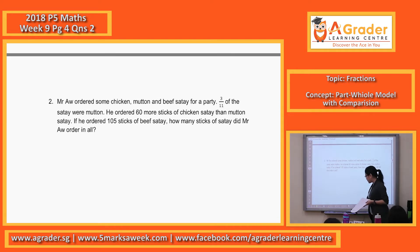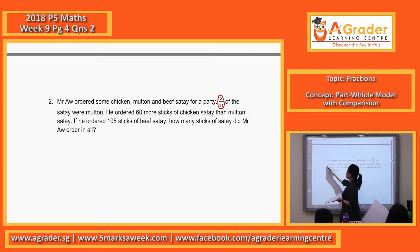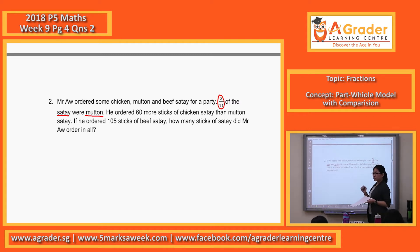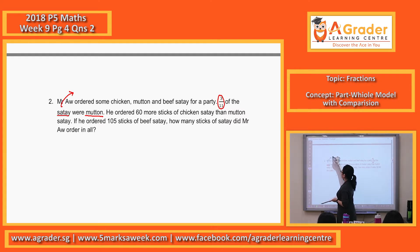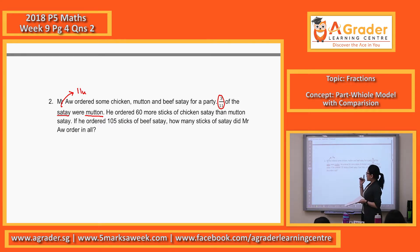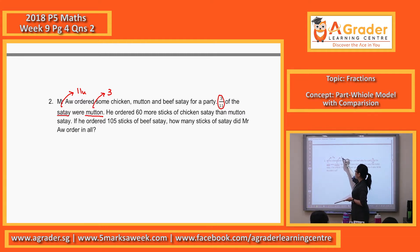The next line: 3 out of 11 of the satay were mutton. These 3 out of 11 — remember the numerator and denominator will always represent something. The denominator is always the total, so the 11 units. The item that is mentioned will be the numerator, which is 3 units.